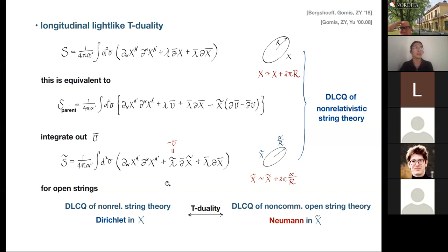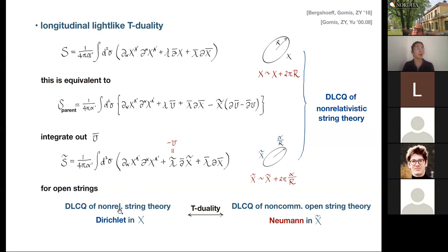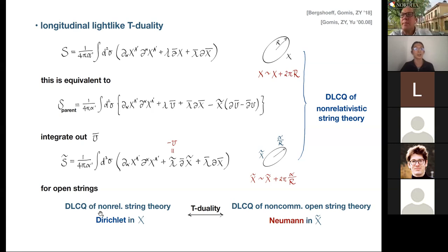You might say this is somewhat exotic — unlike the T-duality relating DLCQ of string theory and non-relativistic string theory, where at least one side has a spatial circle. However, if you apply this idea of light-like T-duality in non-relativistic string theory to the open string sector, it becomes more interesting — because T-duality switches between Dirichlet and Neumann boundary conditions. With different boundary conditions in the longitudinal sector, we get different theories: non-relativistic open string theory and non-commutative open string theory, with very different dispersion relations.